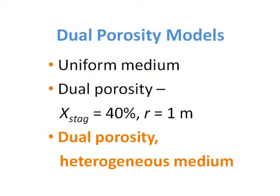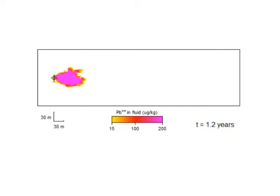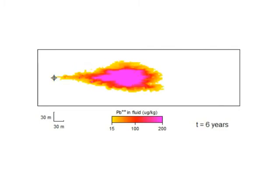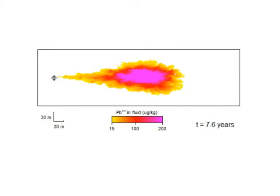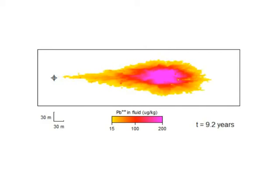The final example is much like the previous run, except that the heterogeneity of the medium gives rise to hydrodynamic dispersion. As before, the plume migrates faster through the domain. The stagnant zone acts first as a sink, then later as a source of the contaminant. Thanks for watching our video on dual porosity modeling.